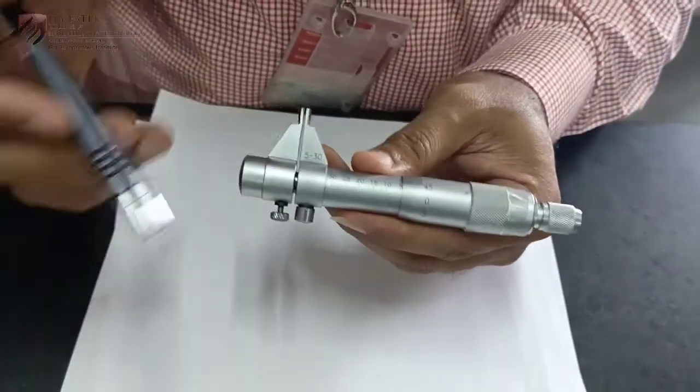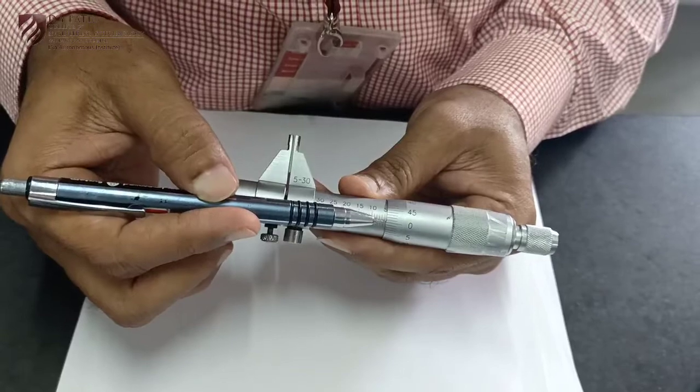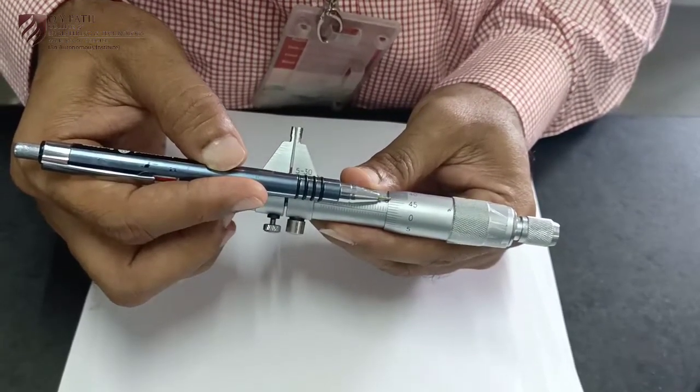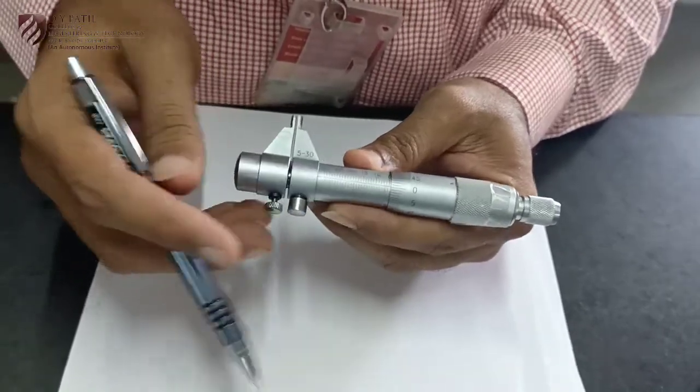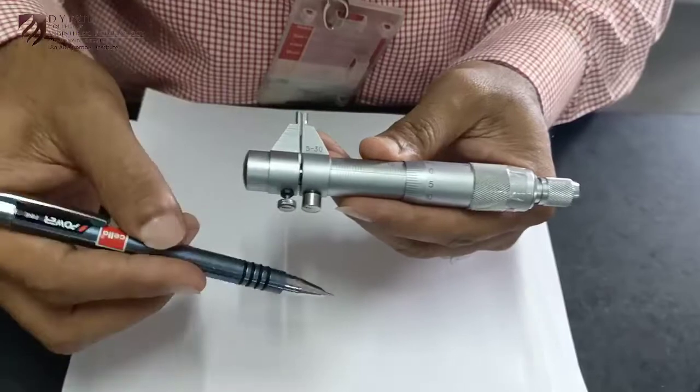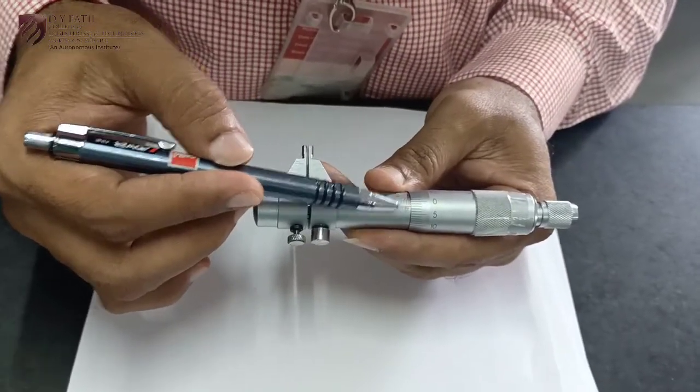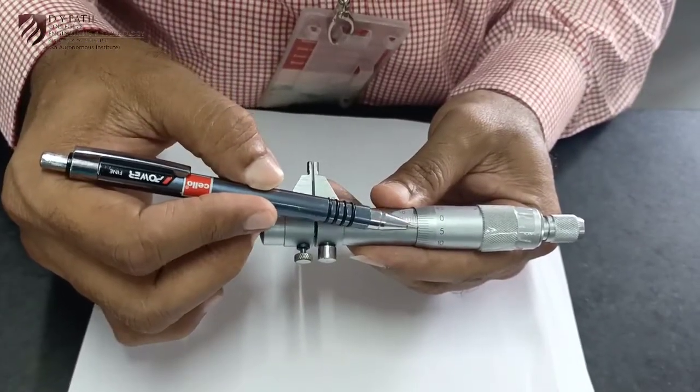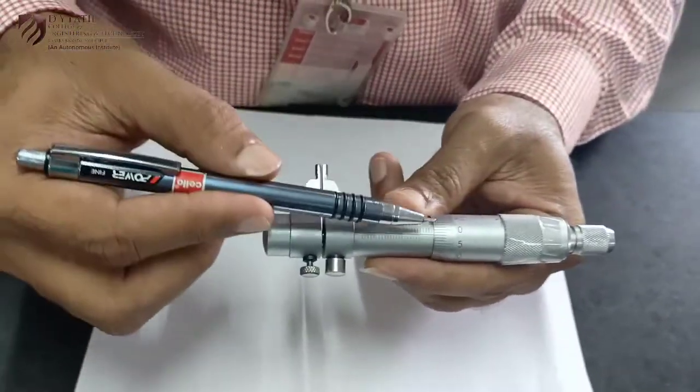Similarly, the circular scale here, if you observe, this is 0 and if I start in this direction, this is 1, 2, 3, 4. This is not 5 but it is actually 45. So here the graduations are provided in the other direction of outside micrometer. Means they will start from this side, that is in anticlockwise side: 0, 1, 2, 3, 4, 5. Likewise, they will complete up to 50.